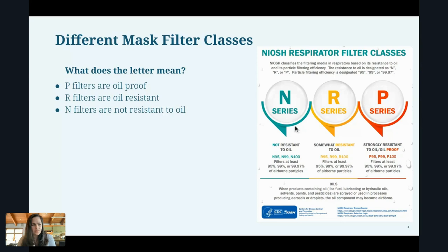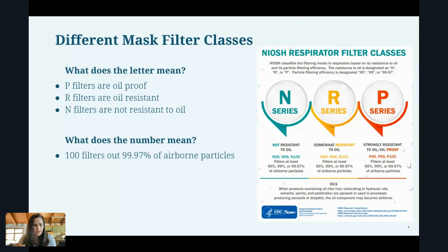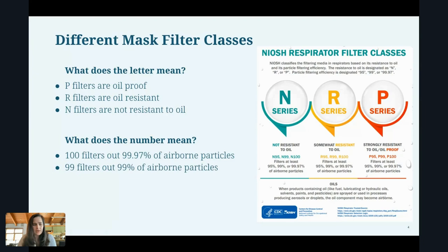The P filters are oil proof and the R filters are oil resistant. As for the number — when you say P100, the 100 means that mask filters out 99.97% of airborne particles. An N99 mask filters out 99% of airborne particles, and an N95 filters out at least 95% of airborne particles. So the number refers to how good the filtering ability of that particular mask or filter respirator is.